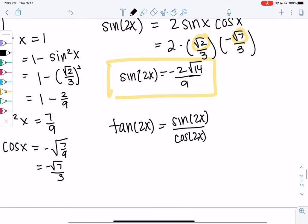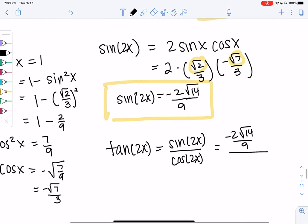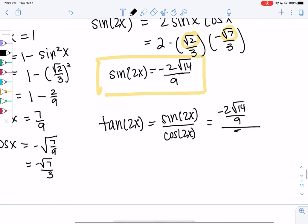If it gets messy, pick a different one. So sine is negative 2 root 14 over 9, and cosine was 5 ninths. And then the way this works, the 9ths cancel out, so we just get negative 2 root 14 over 5. And that's tangent of 2x.